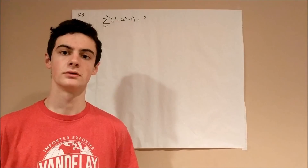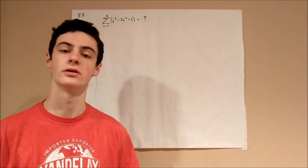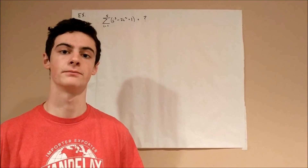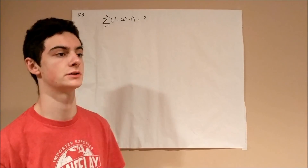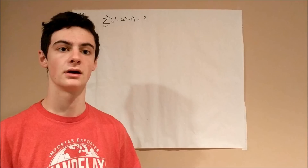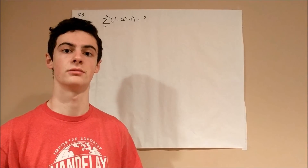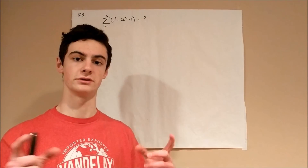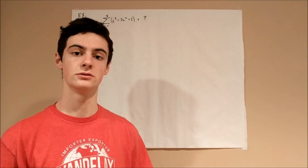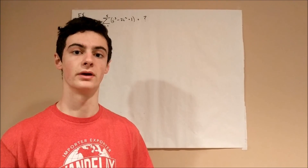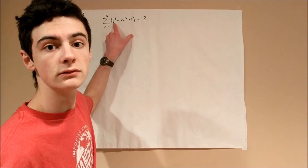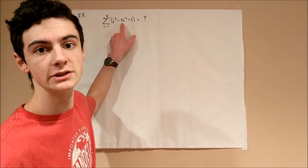Let's try an example. For simplicity, we're just going to use a polynomial function. This way, the third component terminates to a constant value when differentiated, and we can apply the ceiling function rule p equals the ceiling of q plus 1 over 2. Here we have the summation from 1 to 5 of i cubed minus 2i squared plus 1.